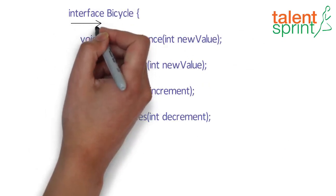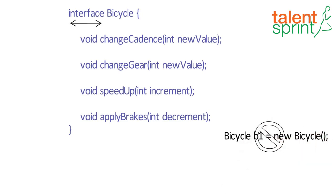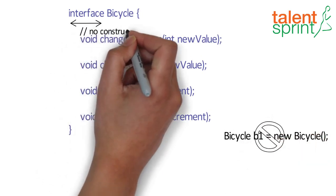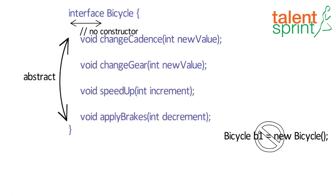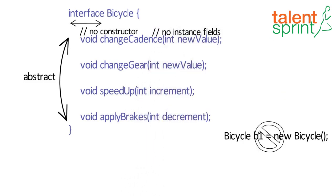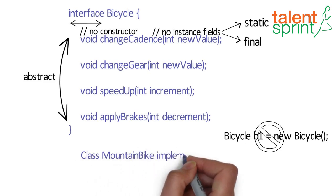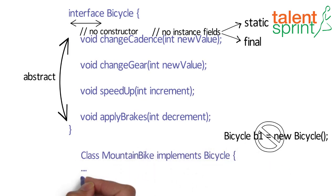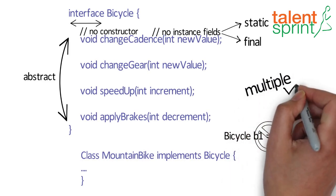An interface is different from a class in several ways. The interface keyword is used to declare an interface. You cannot instantiate an interface, and it does not contain any constructors. All of the methods in an interface are abstract, and it cannot contain instance fields — the only fields must be declared both static and final. An interface is not extended by a class; it is implemented by a class. An interface can extend multiple interfaces.